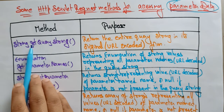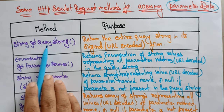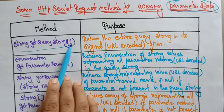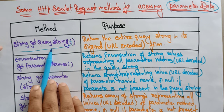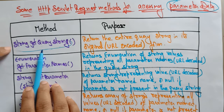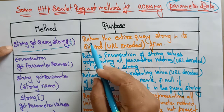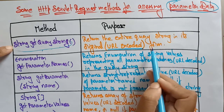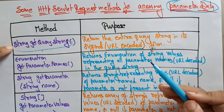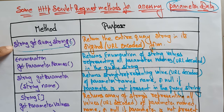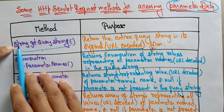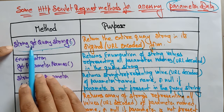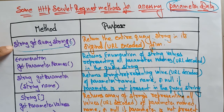The first method is String getQueryString(). Whenever this HTTP servlet request method is called for accessing the parameter, it returns the entire query string in its original URL-encoded form — without decoding. So getQueryString() simply returns the original encoded string.